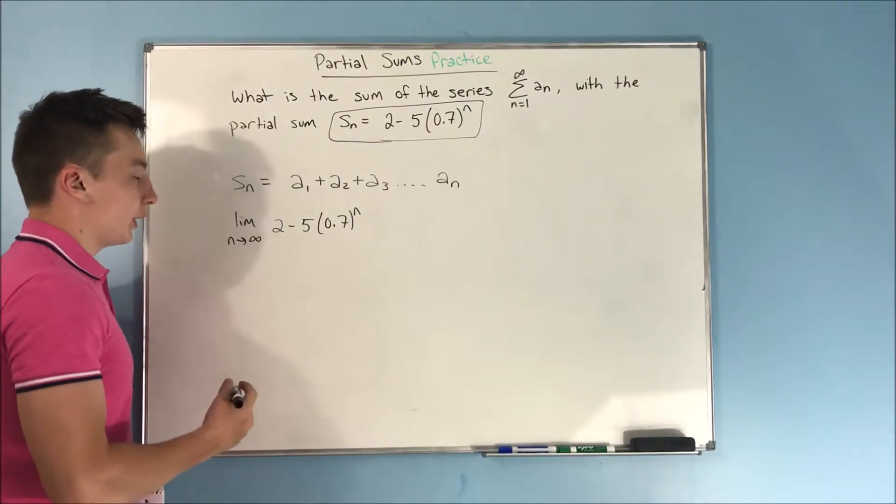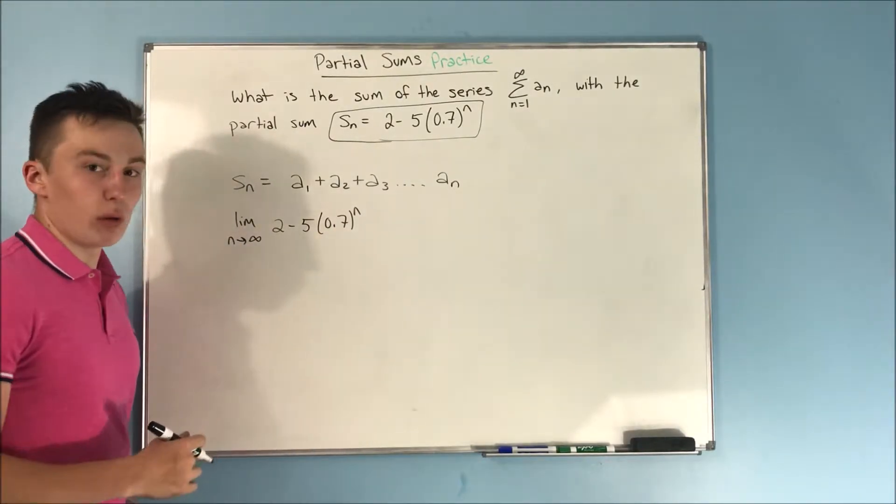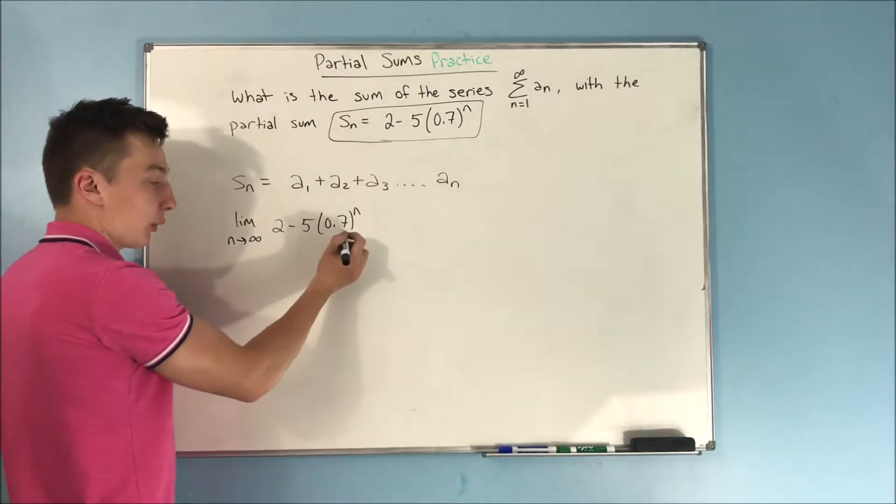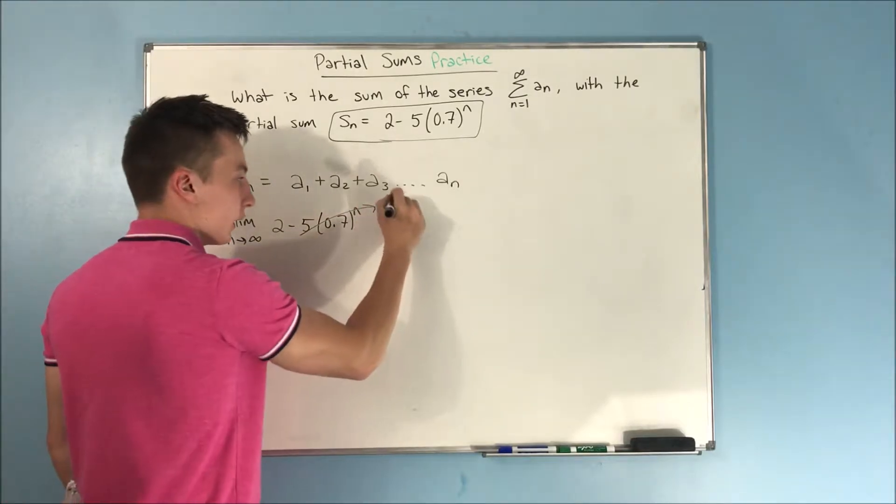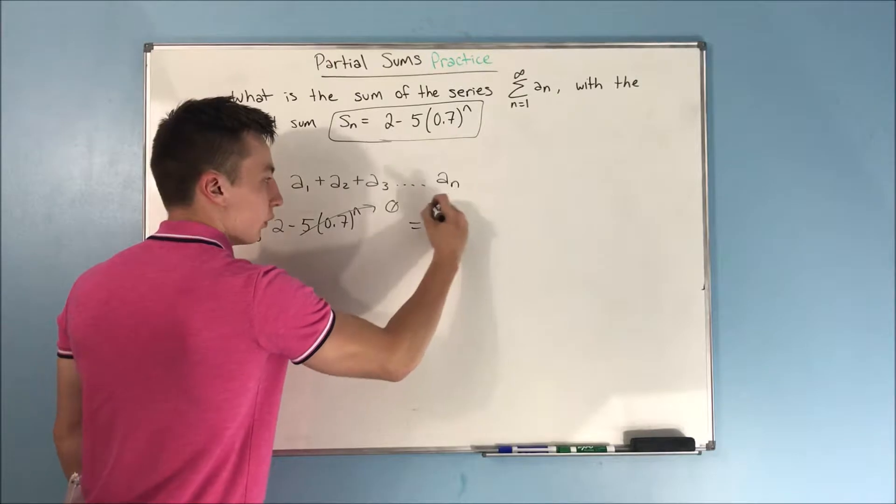Now we just have to look at it. 0.7 to the n, well, where is that going as n approaches infinity? Well, as n approaches infinity, this is just going to get smaller and smaller and smaller, and this whole thing just goes to 0. So we get 2 minus 0, that's just going to be 2.